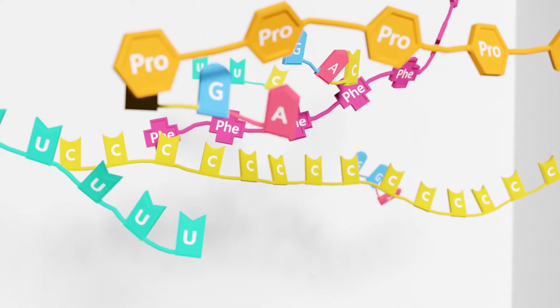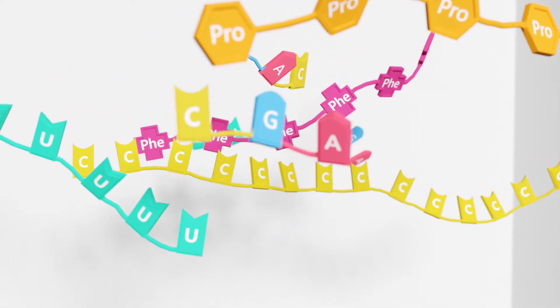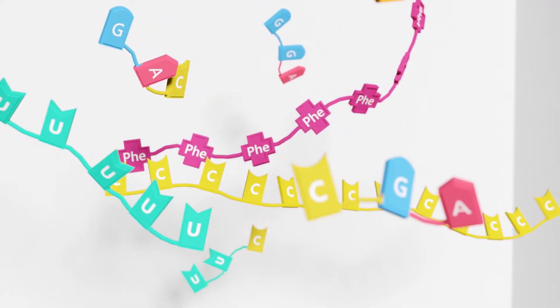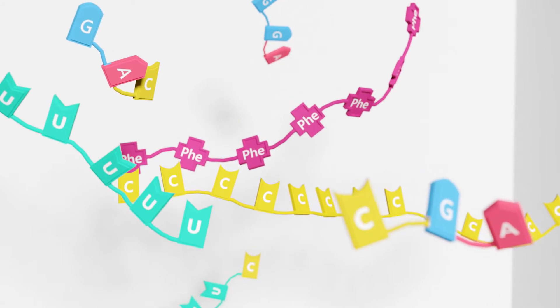The codons he found for each of the 20 amino acids were published in 8 consecutive papers from 1964 to 1966, earning Nuremberg the 1968 Nobel Prize for Physiology and Medicine.